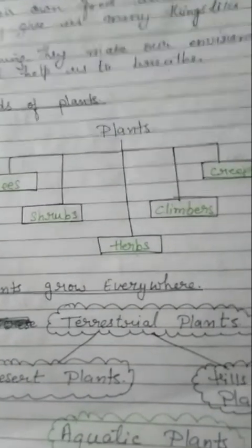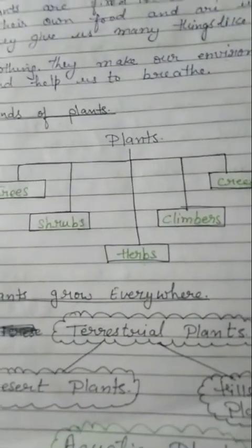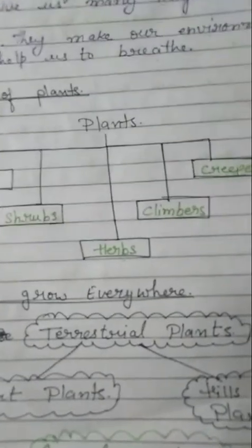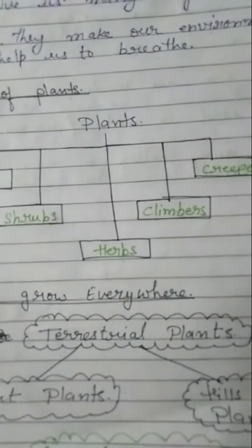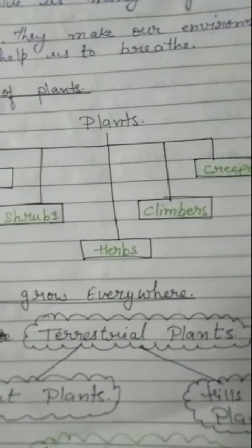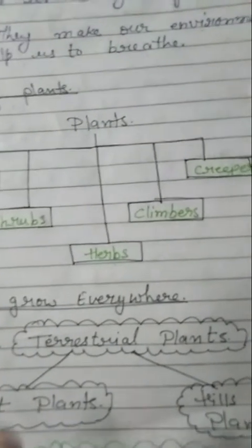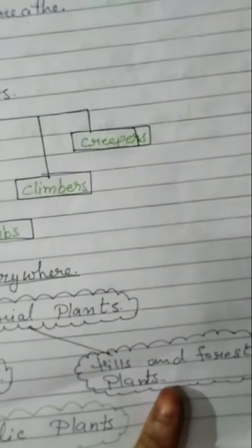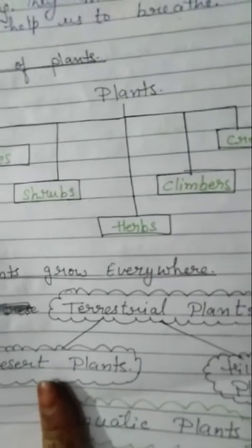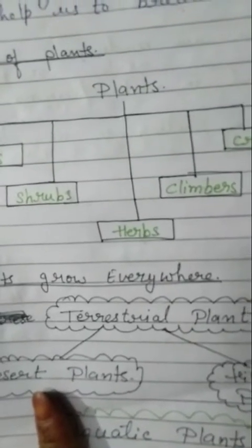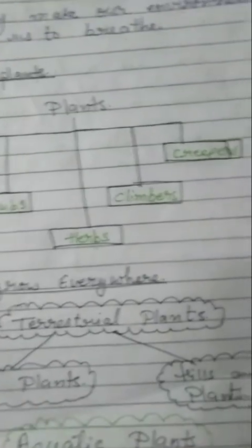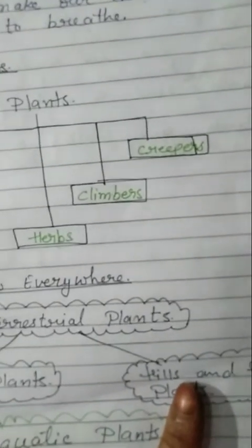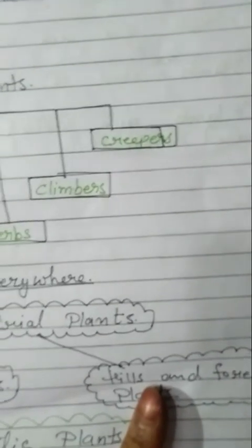Plants can grow everywhere in their habitat. We have two types: terrestrial plants and aquatic plants. Terrestrial plants are plants that grow on land. Terrestrial plants are of two types: desert plants and hill or forest plants. Hill plants are coniferous plants with needle-like leaves.